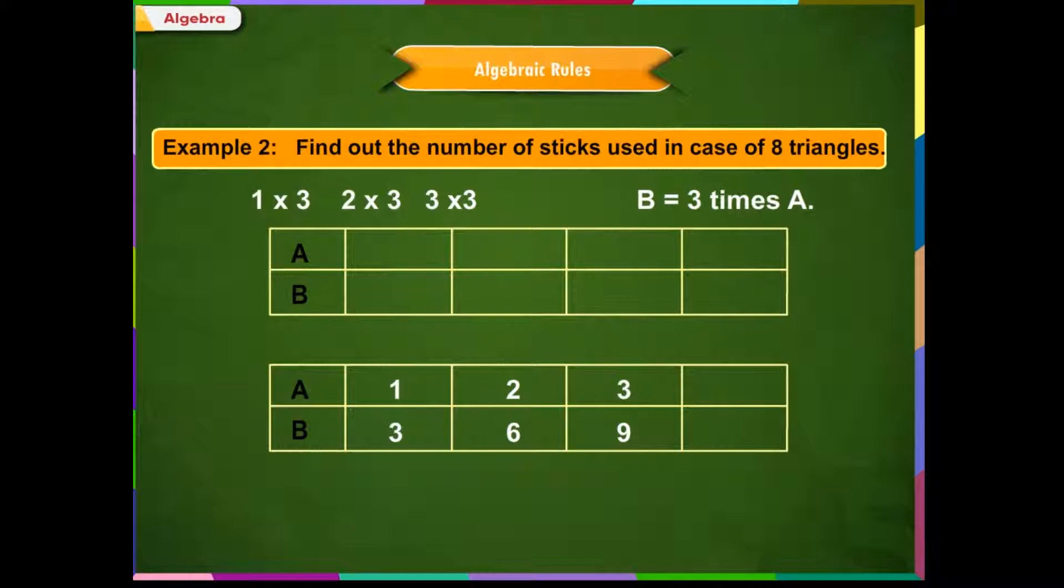So, now let us try to put the information in the table. We see that the first triangle has 3 sticks. So, we write 1 here and 3 here. The second one has 2 triangles and 6 sticks. We write 2 here and 6 here. The third one has 3 triangles and 9 sticks. We write 3 here and 9 here. Let us see the pattern of numbers. How it goes in A and B. We see that 1 times 3 is 3, 2 times 3 is 6, 3 times 3 is 9.